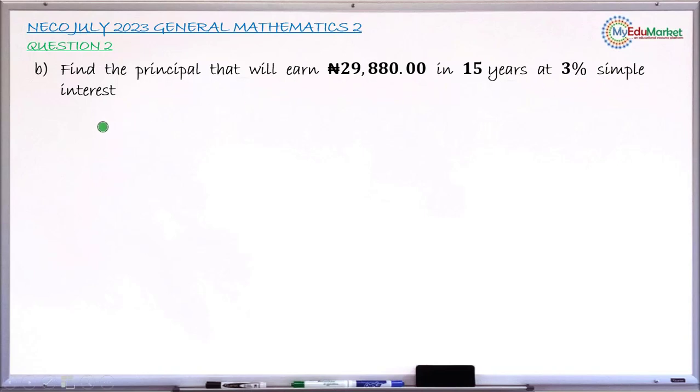Let's see the solution to this question. First, write down the formula for finding simple interest. The formula is I equals PRT over 100.